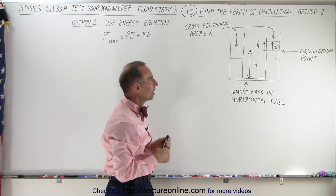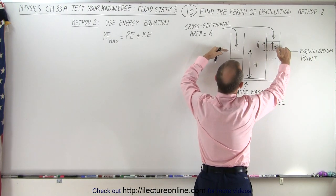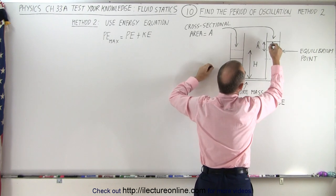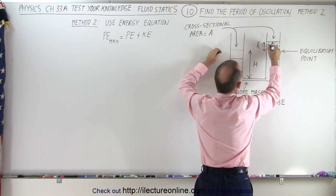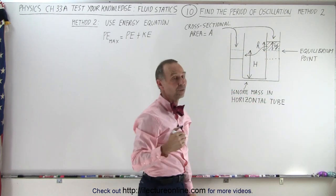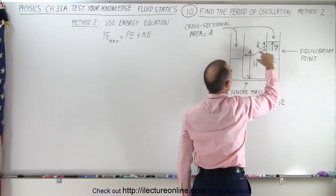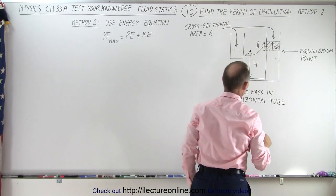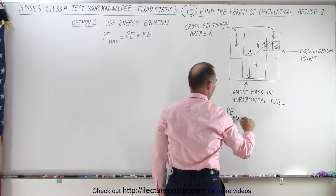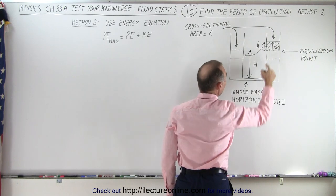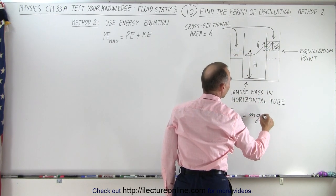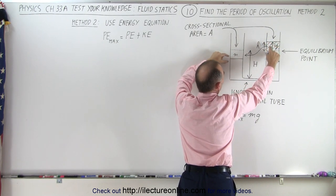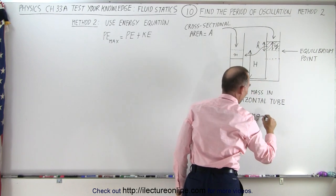First, the maximum potential energy. When we start out, we have the water displaced. The water in this portion will end up over here when things get to the equilibrium point. So essentially, the potential energy is taking this mass of water and pushing it up to this position. The average height difference will be equal to H. So potential energy max is equal to M times G times the height, which is H.